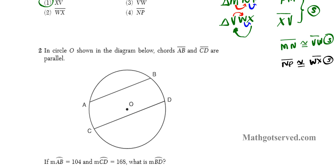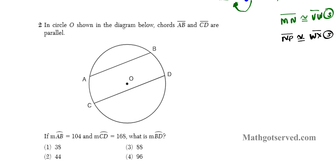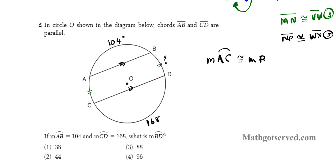Let's move on to question number 2. It says in the circle shown in the diagram below, AB and CD are parallel. If the measure of arc AB is 104 degrees and the measure of arc CD is 168 degrees, what is the measure of arc BD? Since AB is parallel to CD, anytime you have two parallel lines cutting through a circle, they cut out congruent arcs. So arc AC is congruent to arc BD — that's one fact we're going to keep in mind.